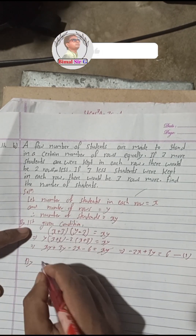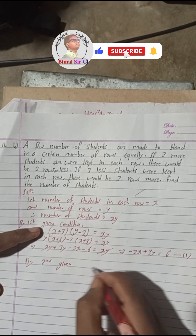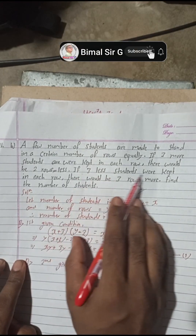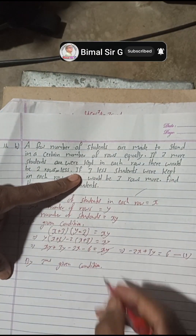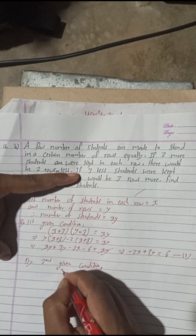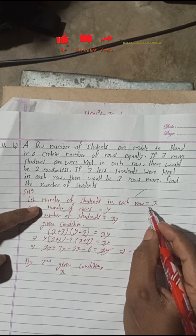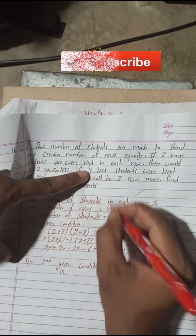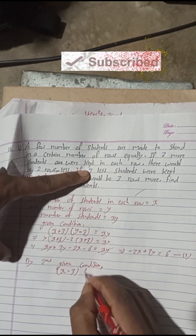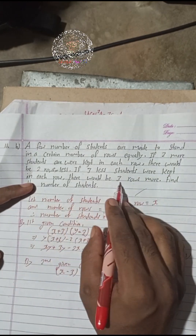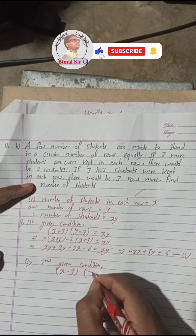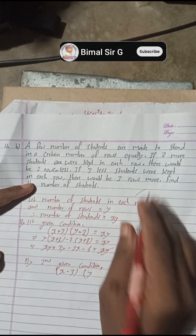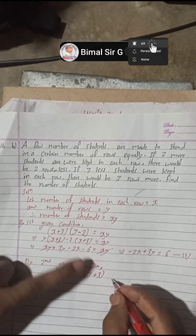By the second condition: if three less students were kept in each row, then the number of students per row becomes x minus three. There would be three rows more, meaning rows become y plus three. The product of these two remains the same, equal to xy.